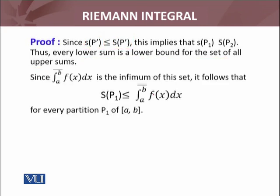Since the upper integral from a to b is the infimum—what is infimum? It's the greatest lower bound. So this is the greatest lower bound. The lower sums are becoming lower bounds of the upper sums, and the upper integral is the greatest lower bound. So since it is the infimum of this set, it follows that s(P₁) ≤ upper integral for every partition P₁ of [a, b]. This is by using the definition of the upper integral.